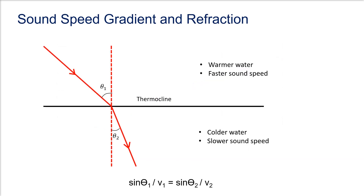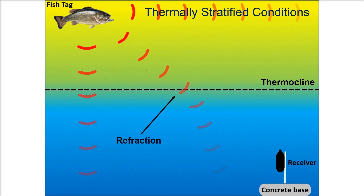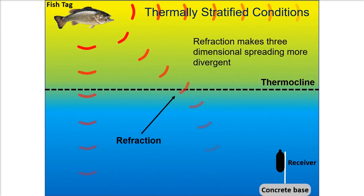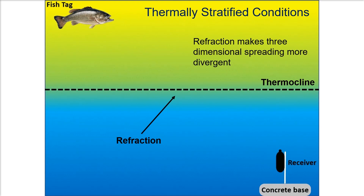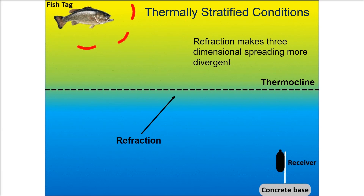A sound speed gradient results in refraction of acoustic signals as they pass across temperature layers. As the signal moves from warmer surface waters to colder, deeper waters, the signal slows down. According to Snell's law, sound speed is proportional to the direction of travel of the acoustic wave, causing refraction as the sound wave slows down upon entering the colder water layer. During the thermally stratified period, instead of traveling in a straight line, sound signals will be refracted as they travel through regions of strong temperature gradient such as the thermocline. This refraction defocuses the sound, spreading out the sound waves even more, and thus reducing the sound volume arriving at the receiver.